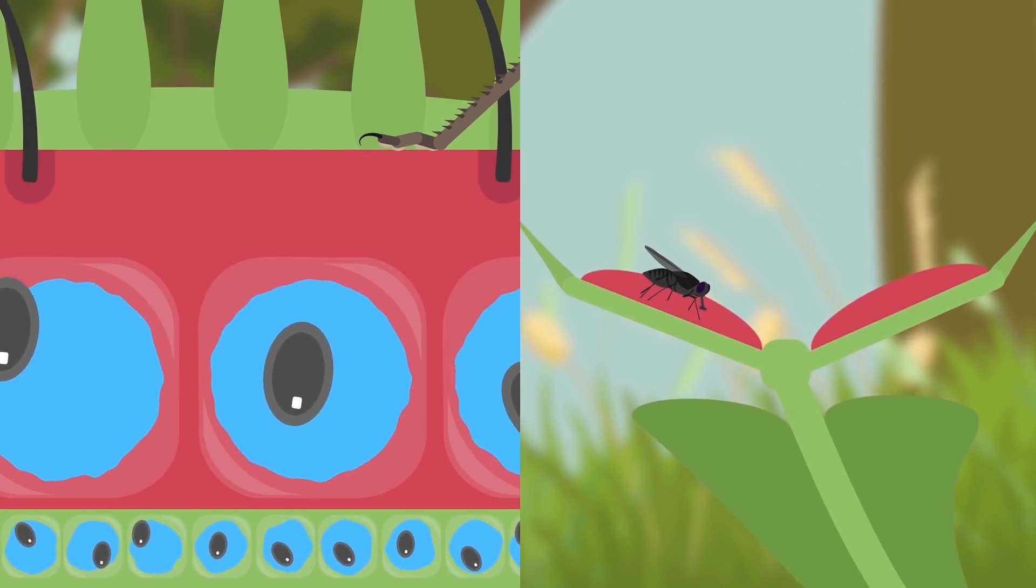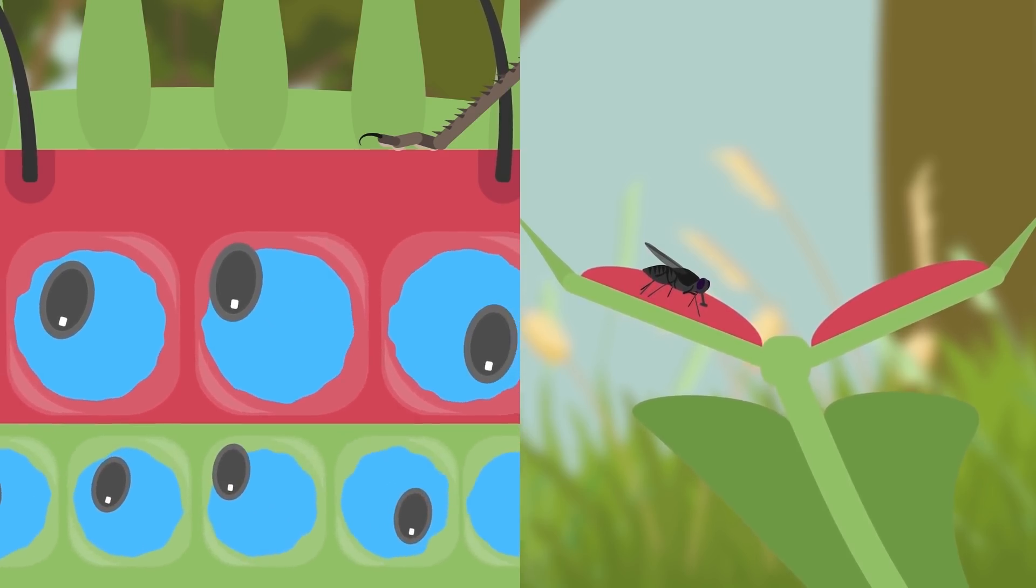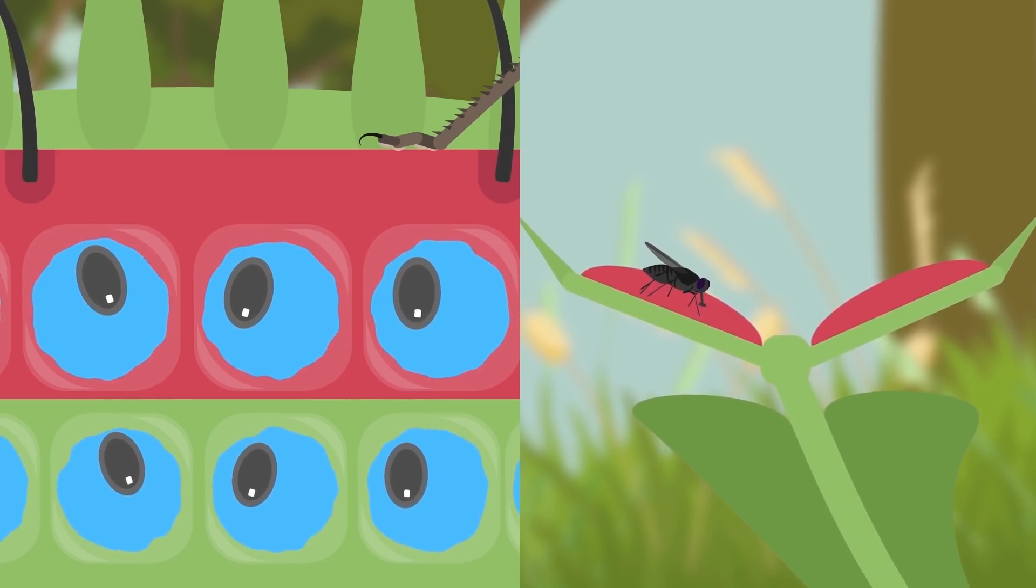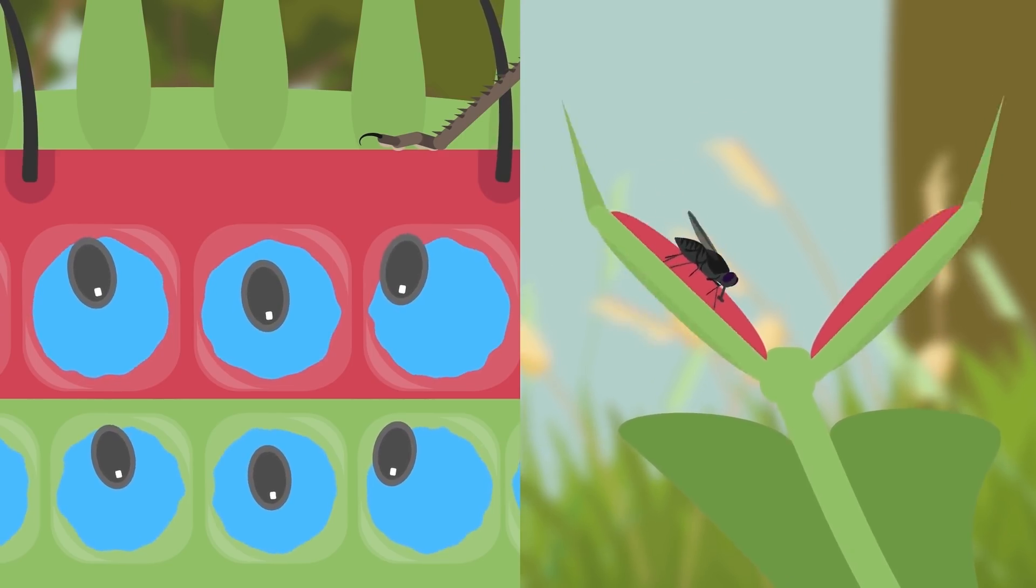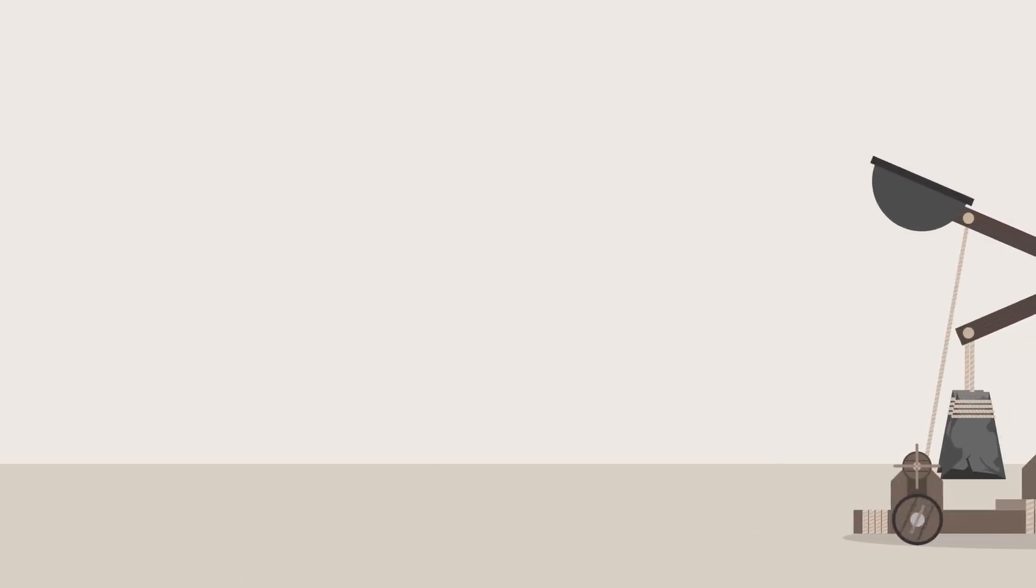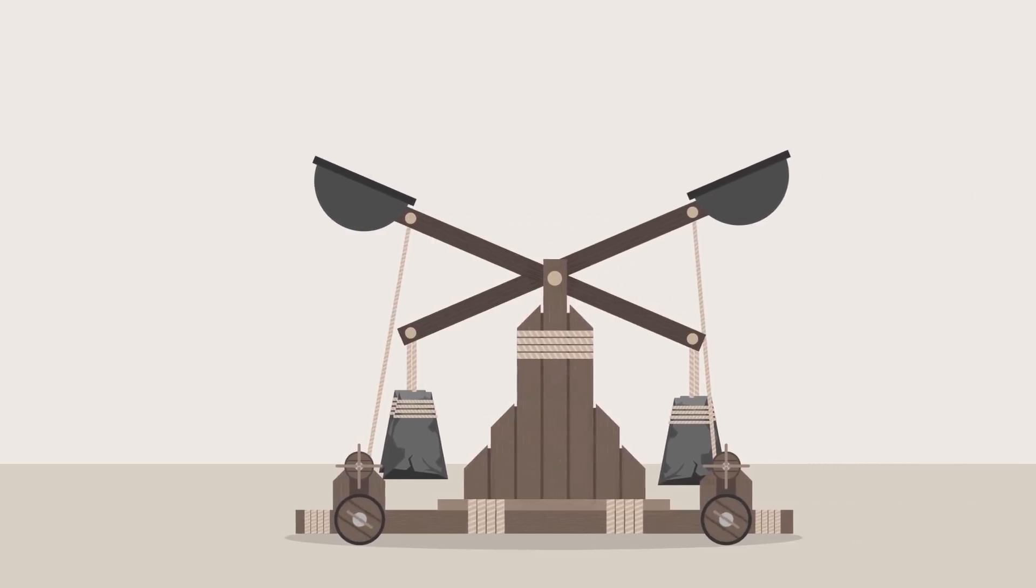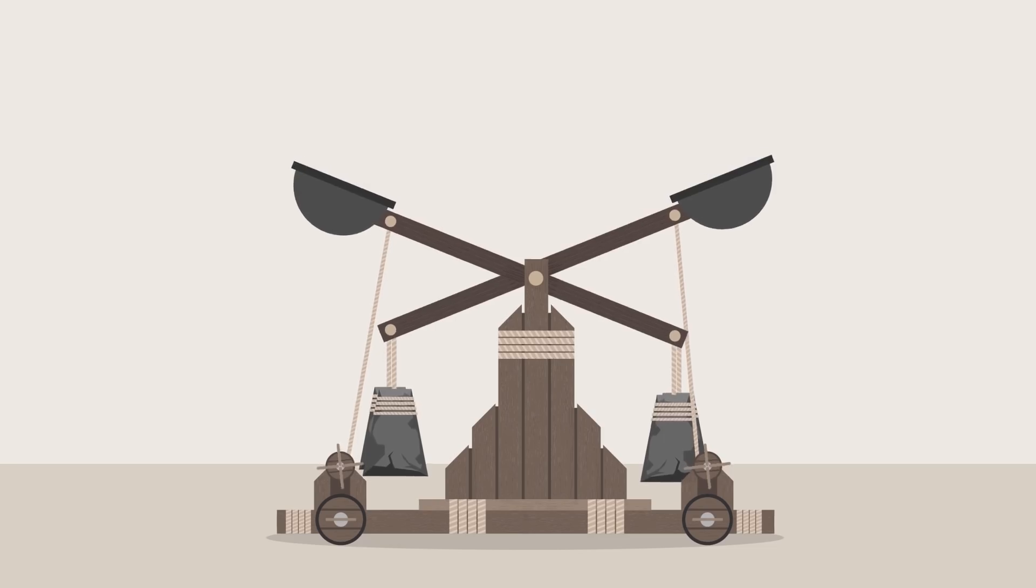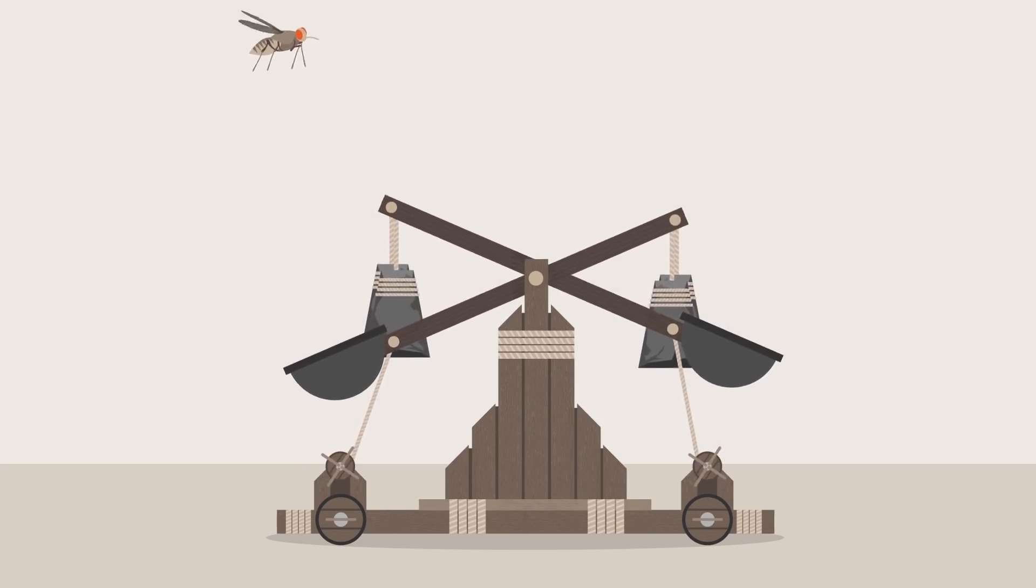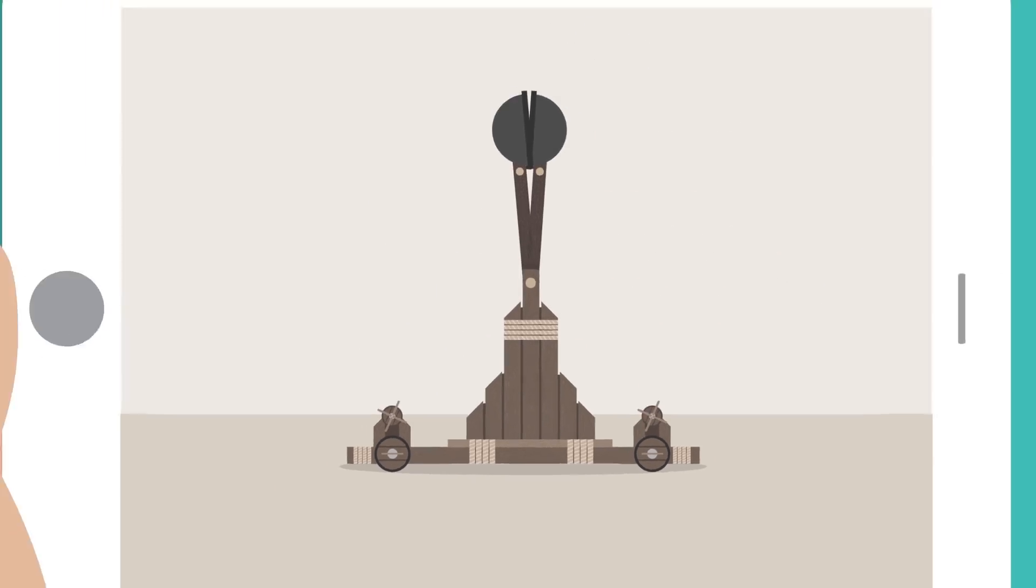If that happens, pores in the cell membranes will open up and water will surge from the cells on the inside of the leaf to those on the outside, till balance is reached. This happens so fast that it causes the leaf to rapidly flip in shape from convex to concave, which closes the trap. Which is interesting because it makes the whole mechanism less like opening and closing your hand and more like cocking a catapult. A process that takes the plant a lot of time and energy, which also explains why the traps need such a long time to reopen. But once the mechanism is set up, all it takes is someone cutting the rope.